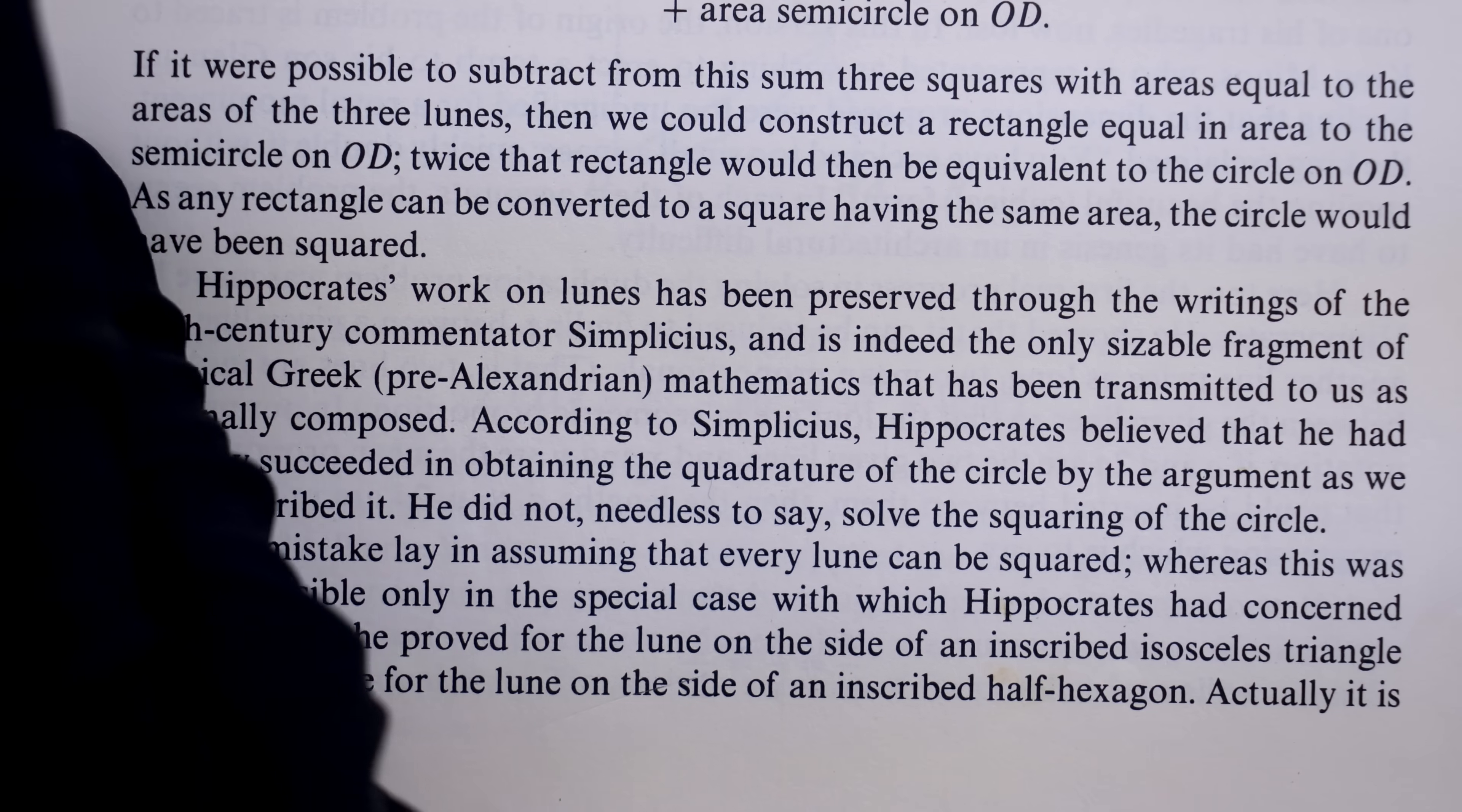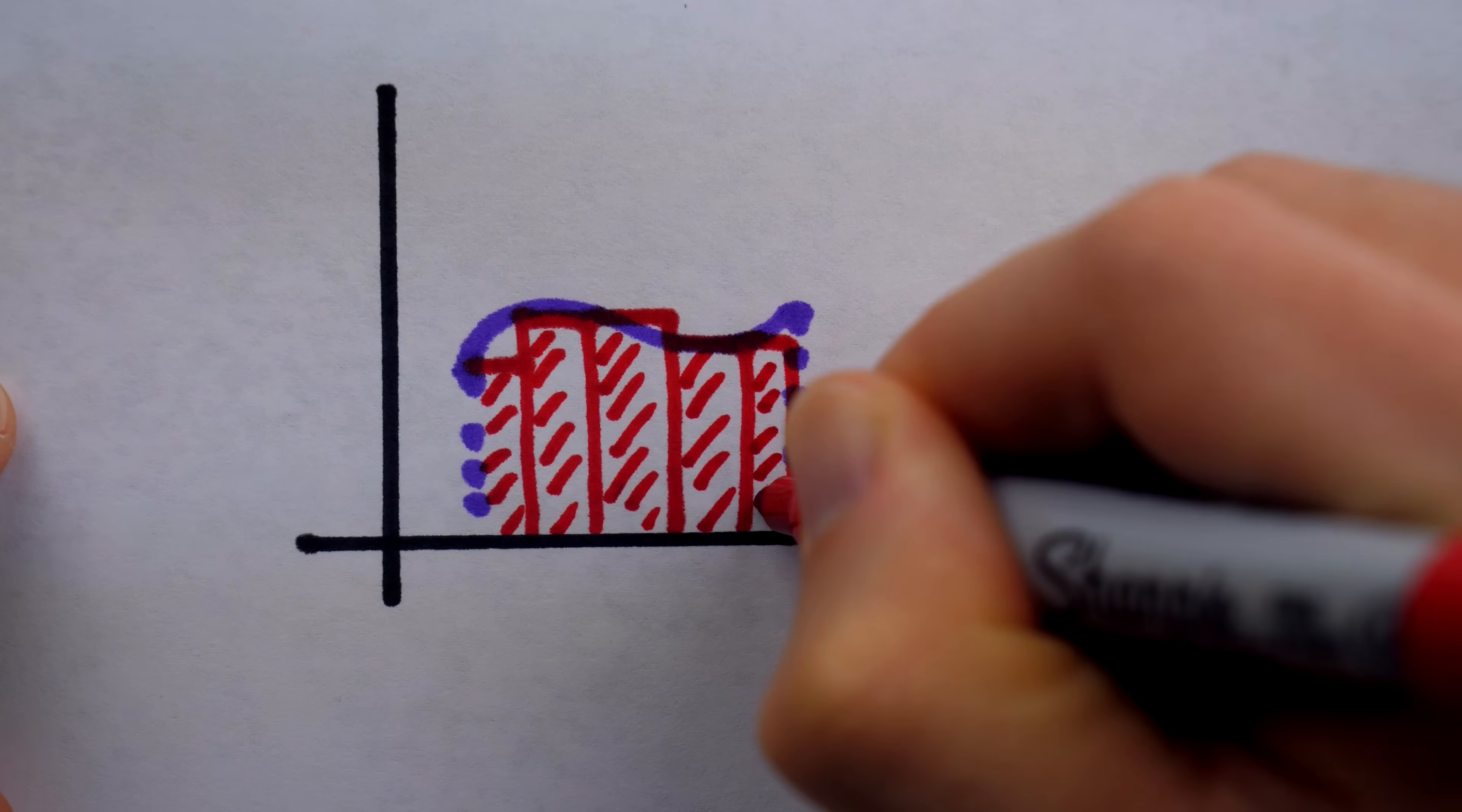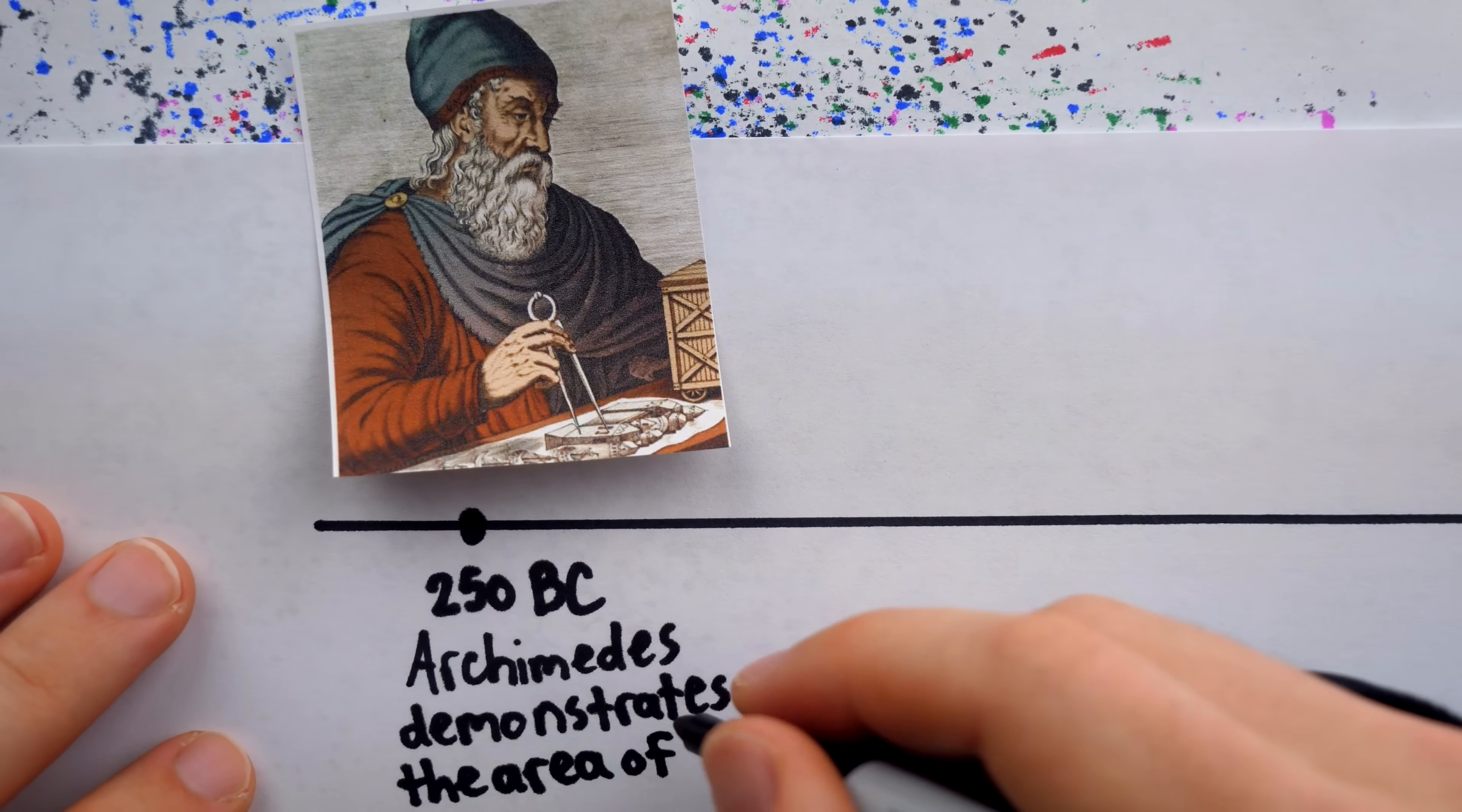And to understand what makes Hippocrates' proof so special, you need to understand that finding the area of a curved figure is a difficult task. In general, finding the area of a region with a curved boundary is done using calculus. But you may have learned a thing or two about circles. Circles, we know, have an area of pi times the radius squared. And this was known long before the discovery of the calculus. The area of a circle was demonstrated by Archimedes in 250 BC.